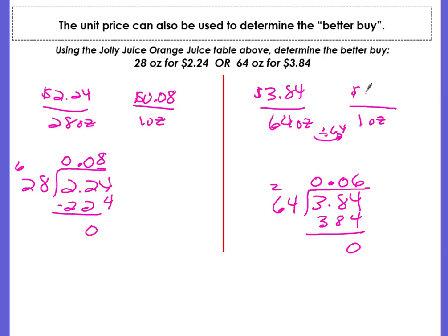So the unit price or the unit rate is going to be 6 cents per ounce. Now we just compare them. Once we know the unit prices, which one is the better deal? Which one is cheaper? And that would be the 6 cents. So the 64 ounce for $3.84 is the better buy.